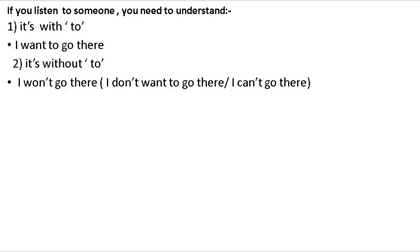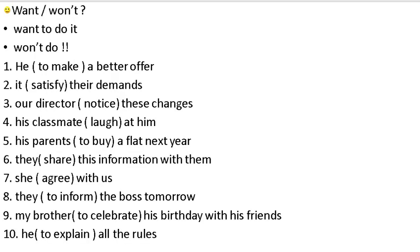If you listen to someone, you need to understand: one — it's with 'to': 'I want to go there.' Two — it's without 'to': 'I won't go there,' 'I don't want to go there,' 'I can't go there.' Positive form uses 'to,' but negative form does not.